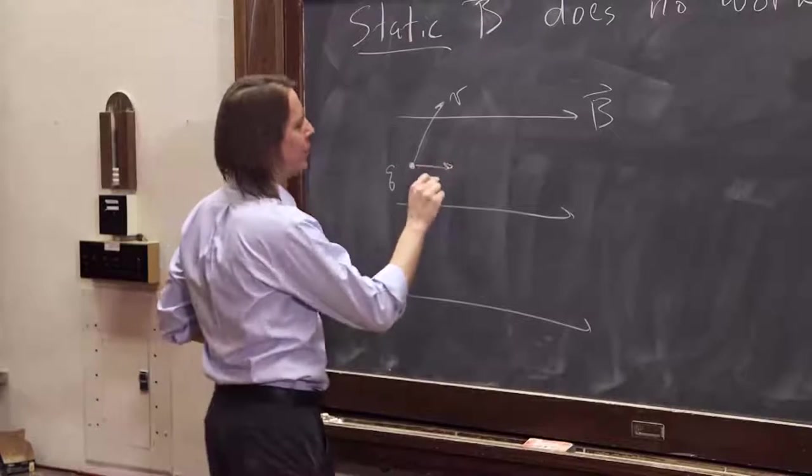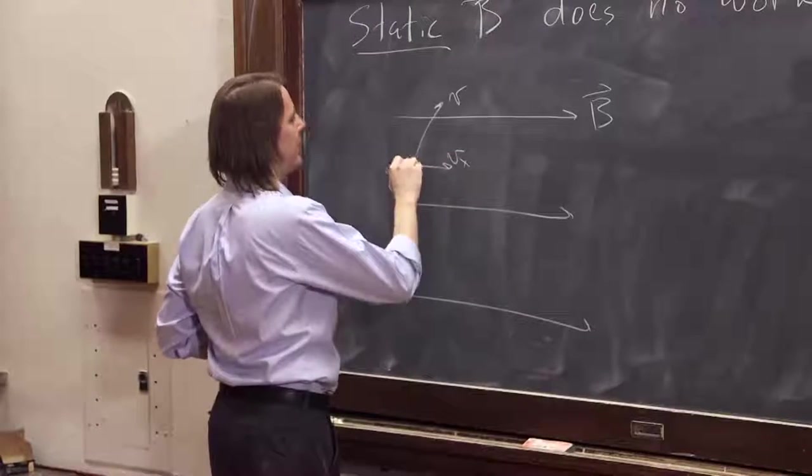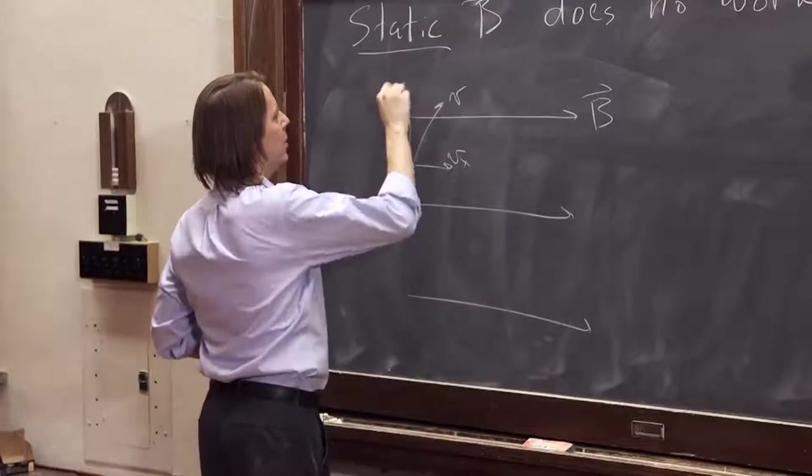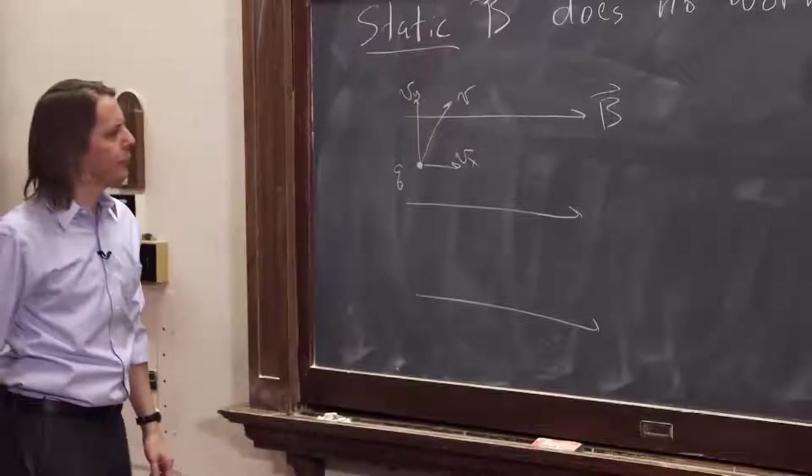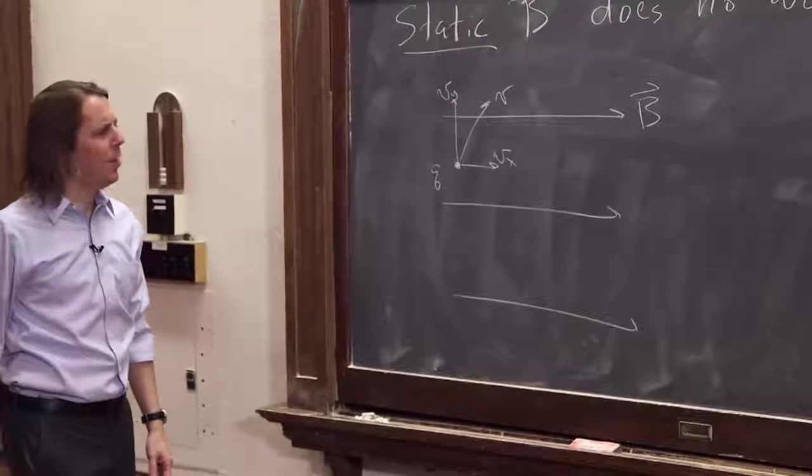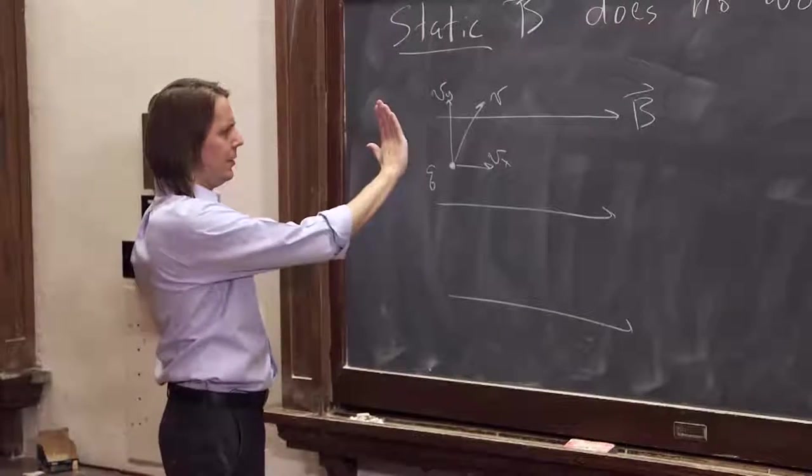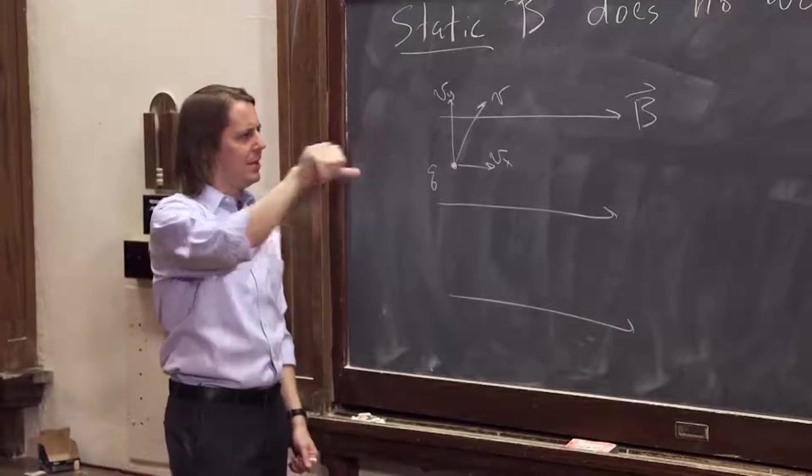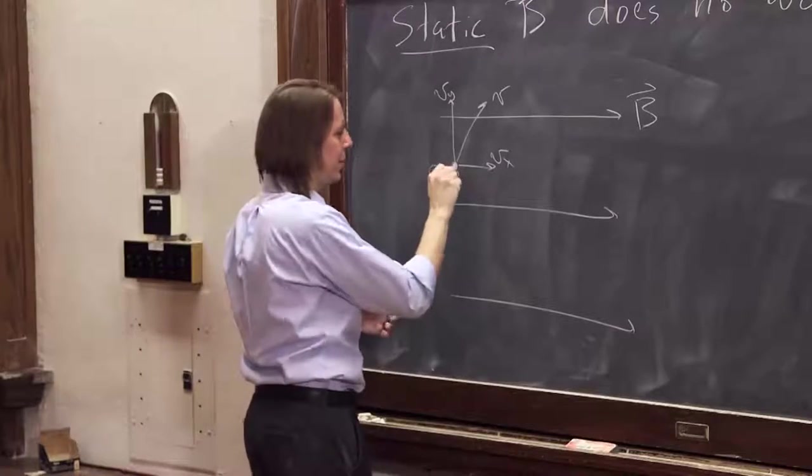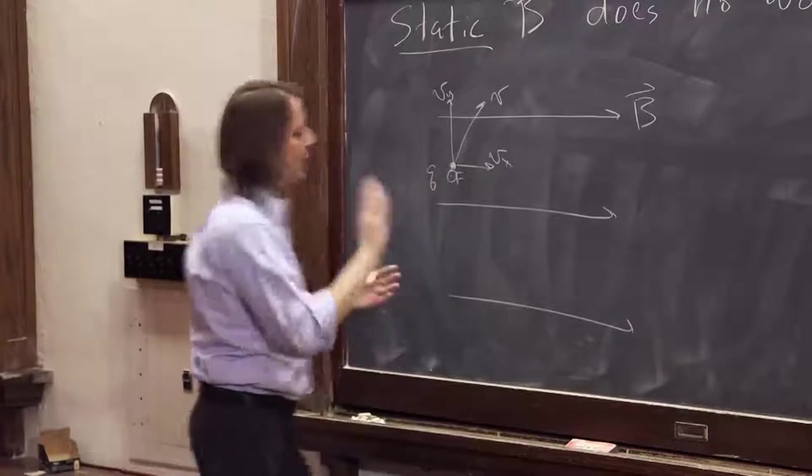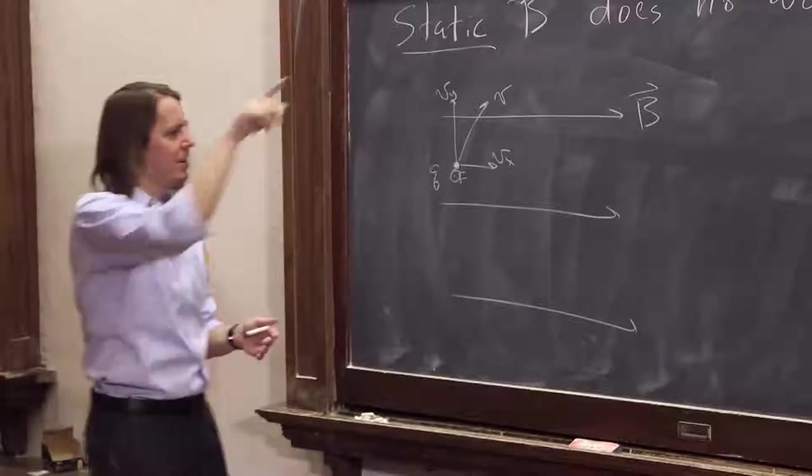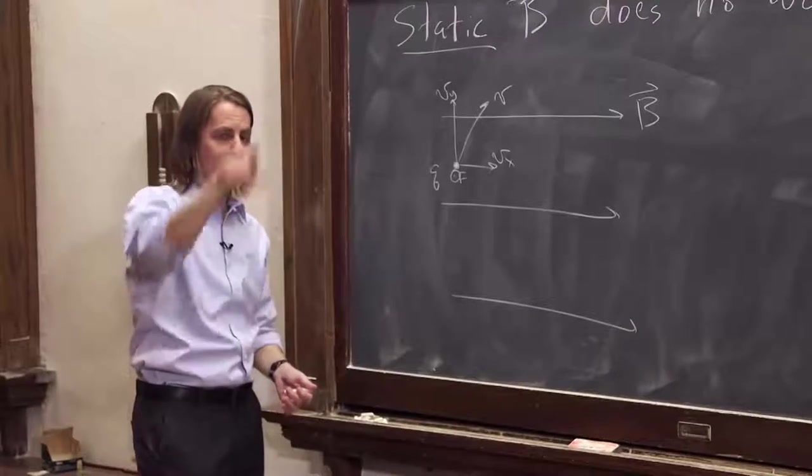Well, then it's going to have a component forward, call it Vx, and a component up, call it Vy. Alright, so Vy is what wants to make it go in a circle. V cross B in, the force would be in. And of course, that force's direction will change. That's going to make it want to spiral like this, or go in a circle like this.